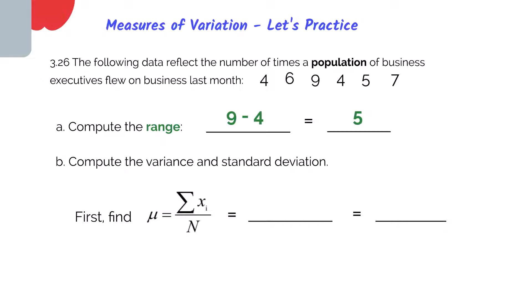So as you recall, to get the average of something, we'll add up all of our numbers and then divide it by the population size. So when I add up my flights for business executives, we get 35 and our big N or the population size is the six business executives. So if we divide these two numbers, we get 5.8333.